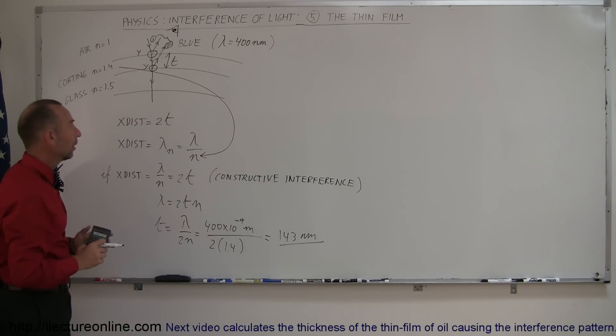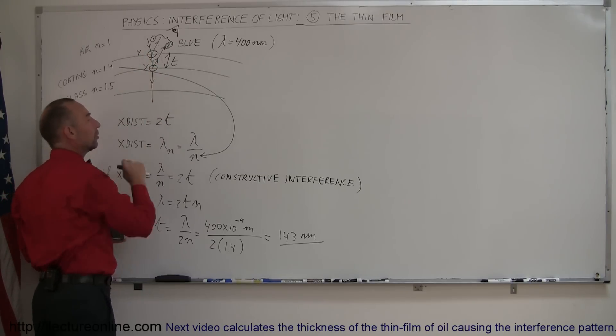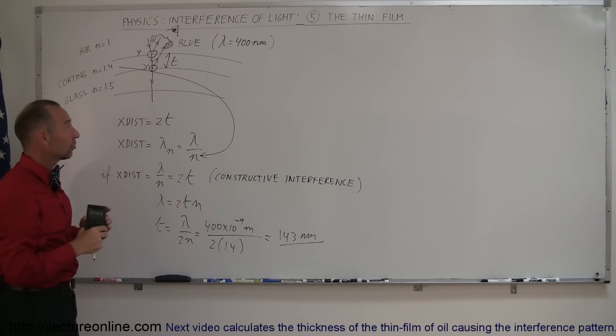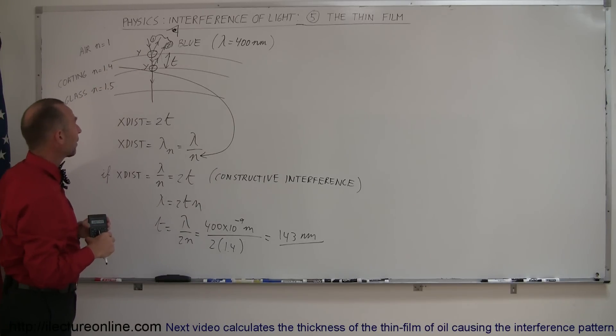But, what if one of these has no phase shift, and the other one does? That means the two rays already are 180 degrees out of phase, without having to travel an extra distance. And there's going to be an example next, when we continue with this topic, on how to deal with it when these two are not the same.